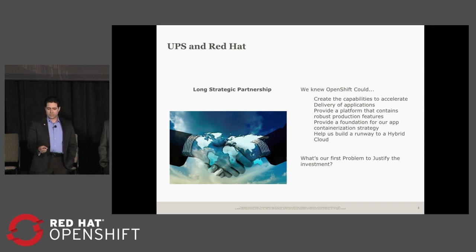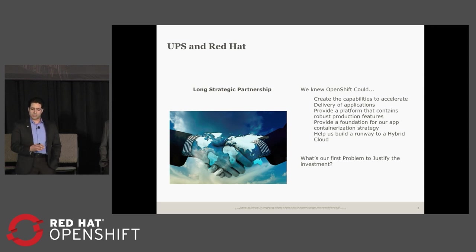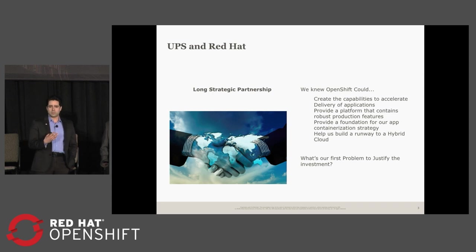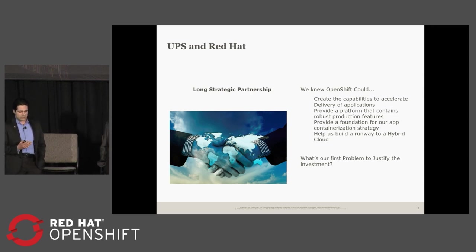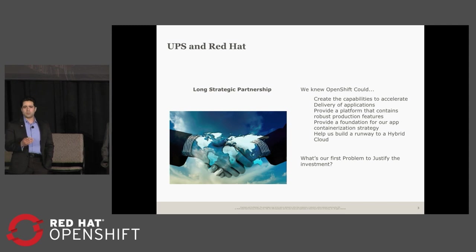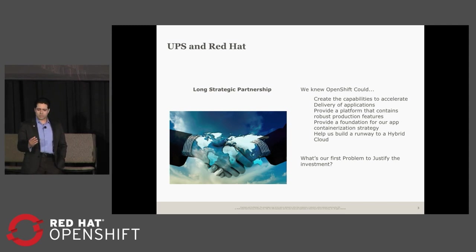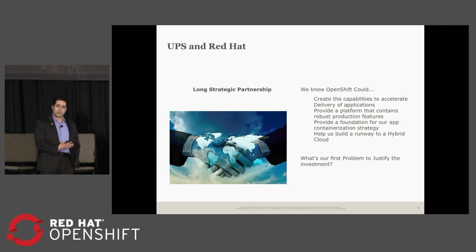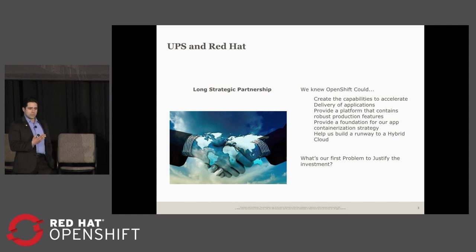We wanted to create the capabilities to accelerate the delivery of applications — kind of get the infrastructure out of the way from application teams — and then provide some really robust runtime features like HA and load balancing. Then as we started using OpenShift, we saw that there was really more there. There's this possibility to create what we think is a private cloud and provide a roadmap that gets us onto a hybrid cloud, which aligns well with our needs. One of the things was which first application would justify that investment.